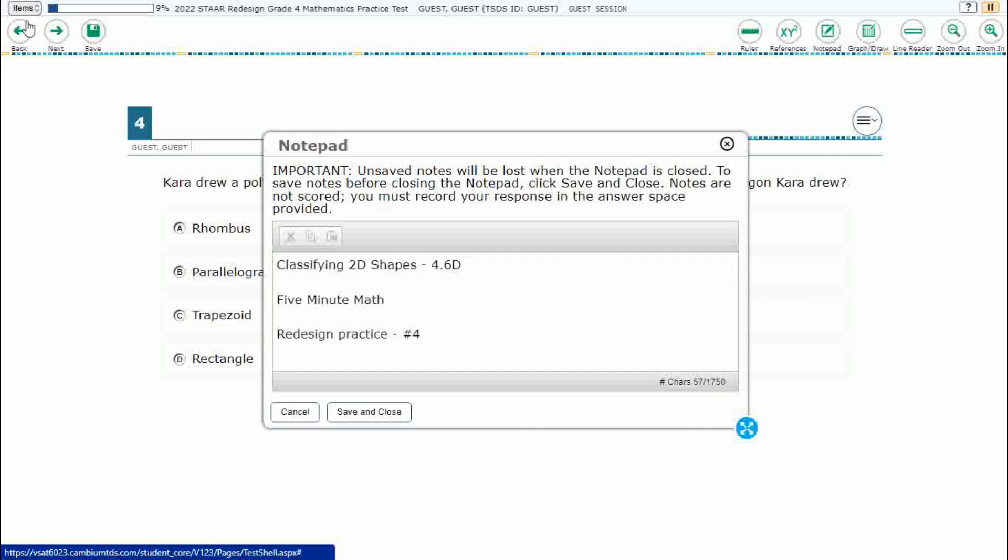Hello and welcome to 5-Minute Math. Today we're looking at the fourth grade concept of classifying two-dimensional shapes. This is standard 4.6D in the great state of Texas.